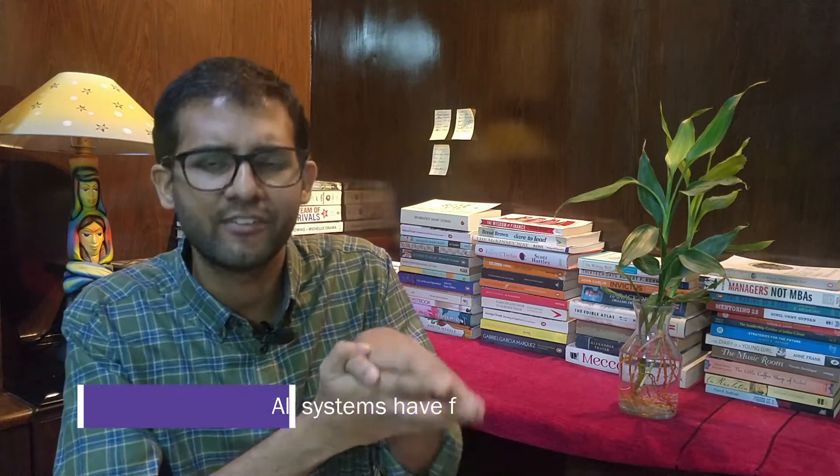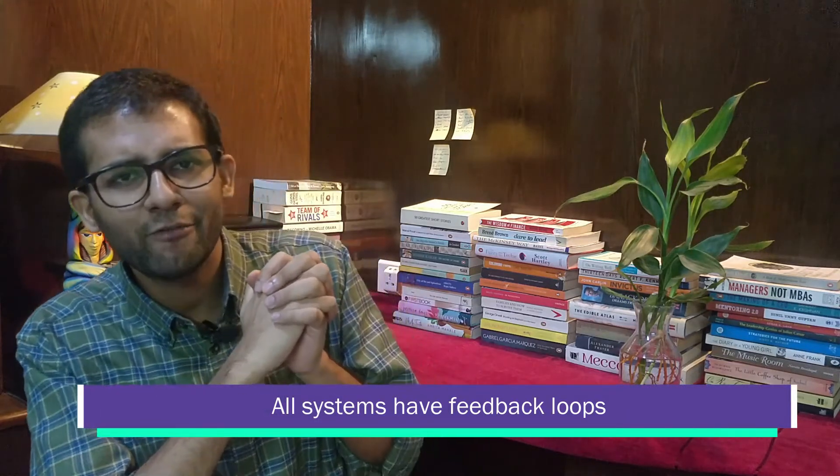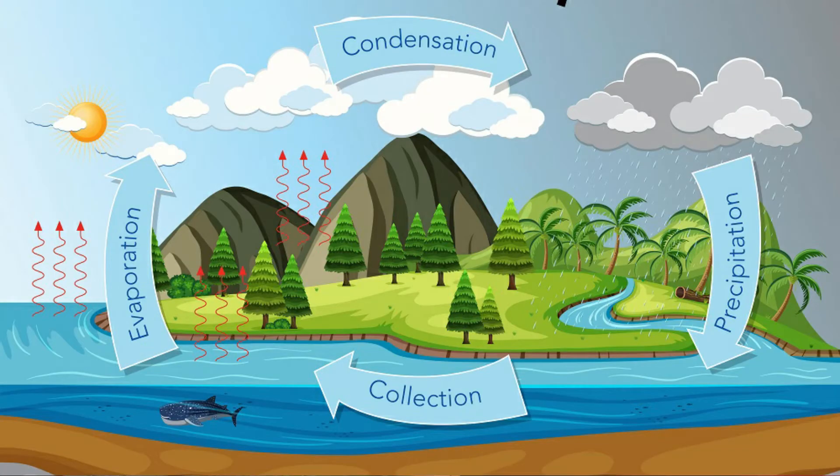The second thing is that systems thinking has feedback loops. If you look at all systems in nature or in this world, it is always a closed loop. If you look at the water cycle, water flows from rivers into the sea, evaporates from water bodies, goes up into the atmosphere, comes down as rain back into rivers and the sea — it's a closed loop. Similarly, the carbon cycle is a closed loop. Most systems in the world and in nature are closed loops.